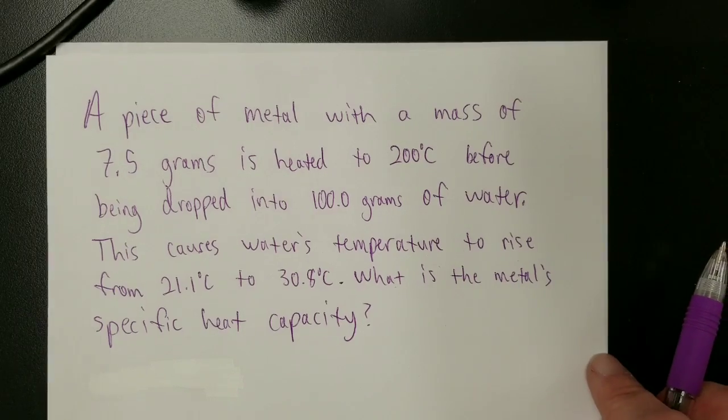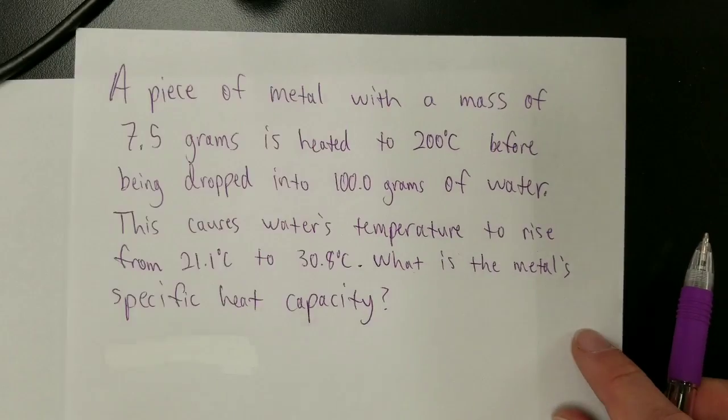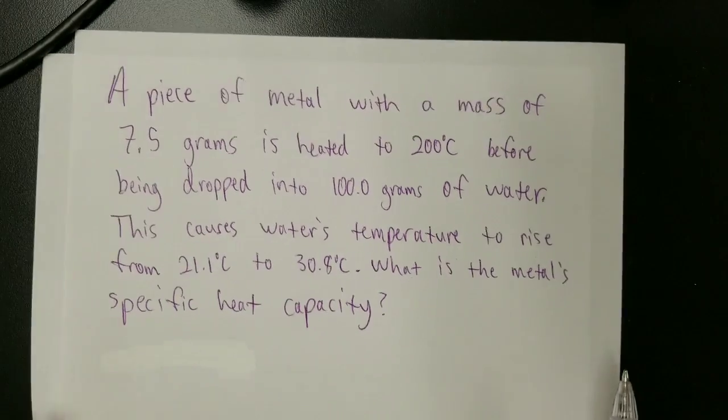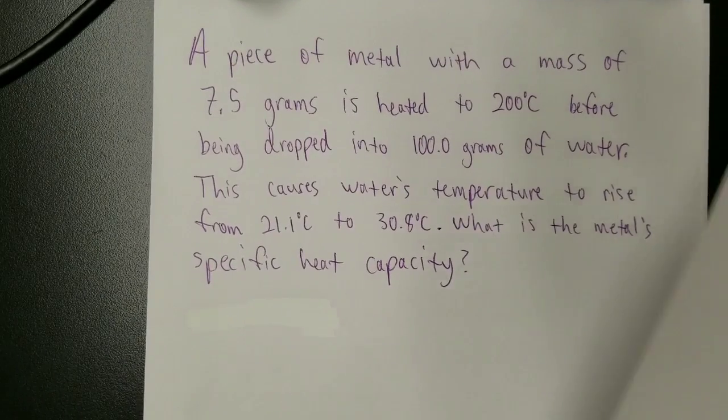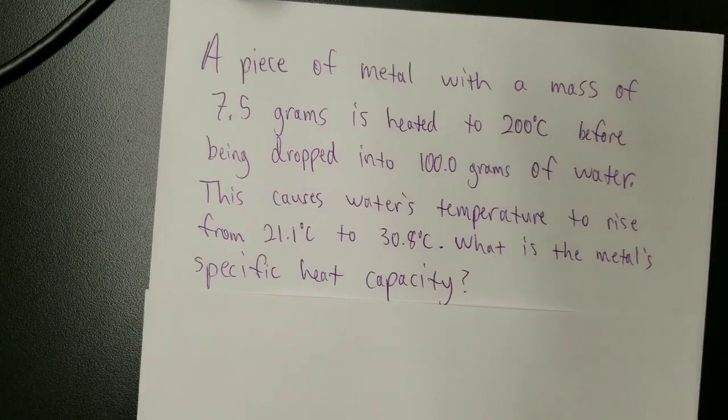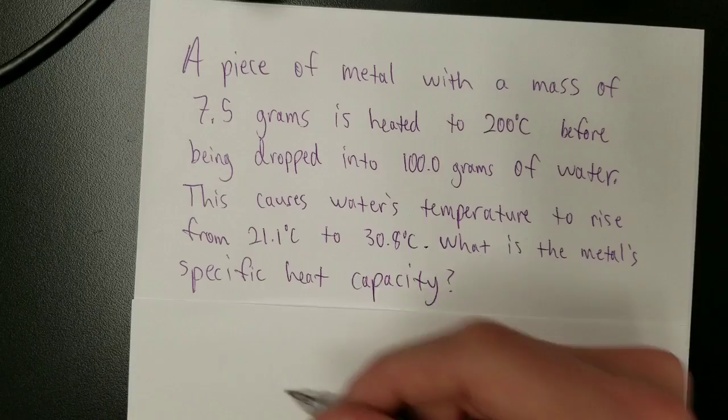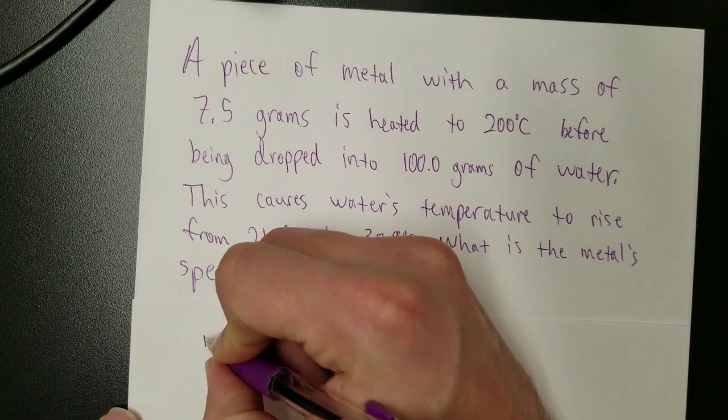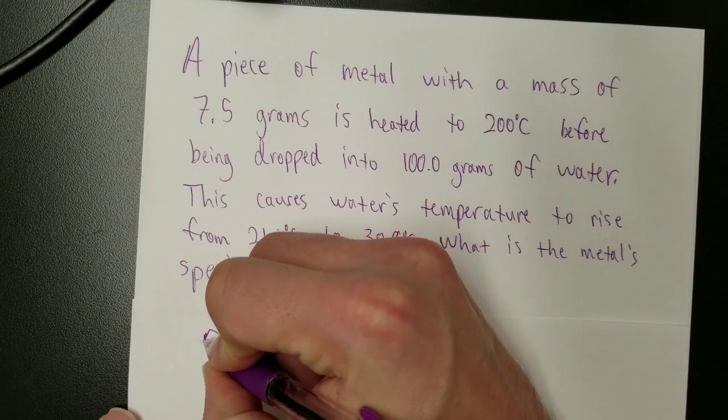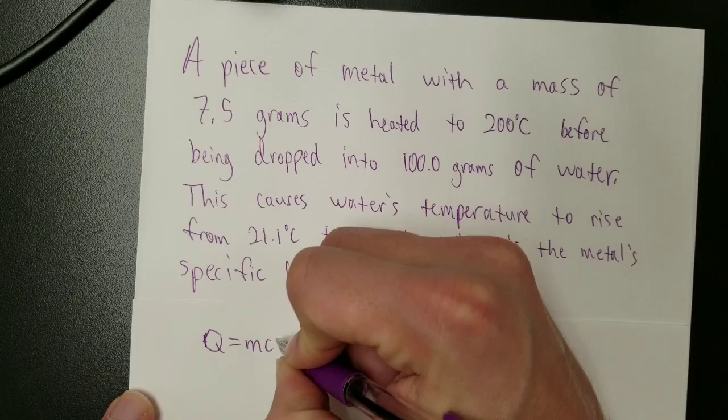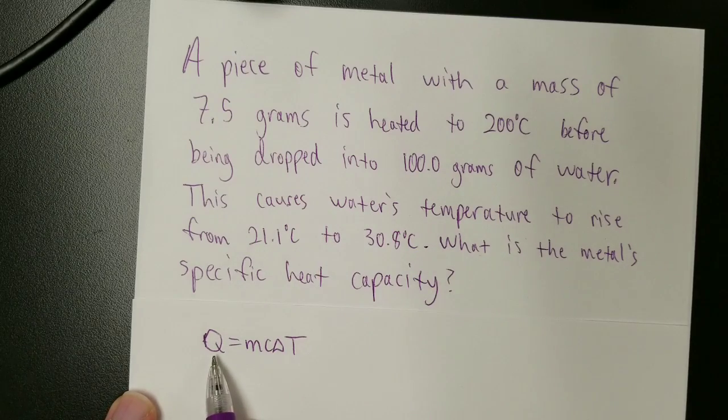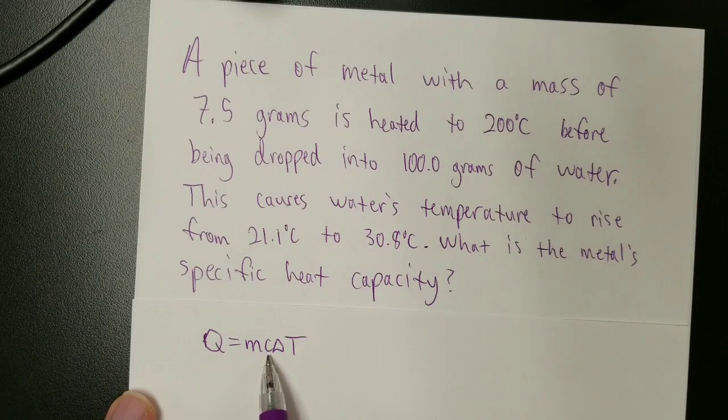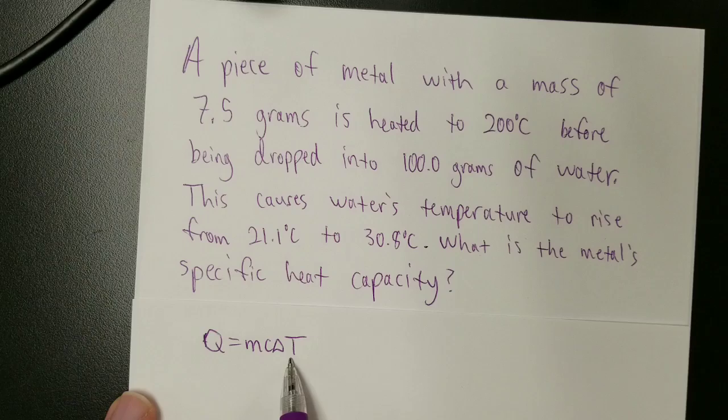First of all, if you're going to do this, it's very important to understand what it is you're trying to solve for. If you're going to find specific heat capacity, understand that you are going to be working with this equation: Q equals mcΔT, where Q is energy, m is mass, C is specific heat capacity, and delta T is change in temperature.